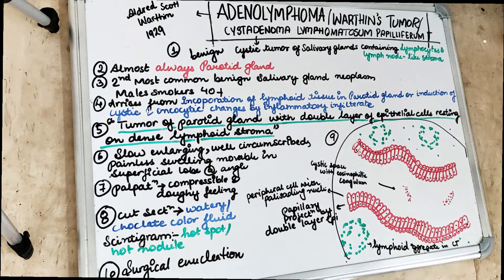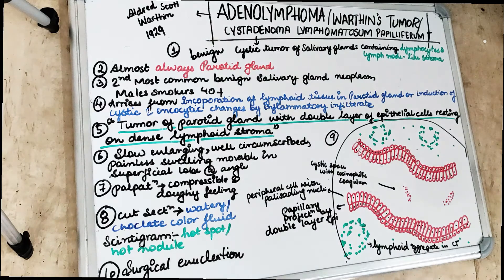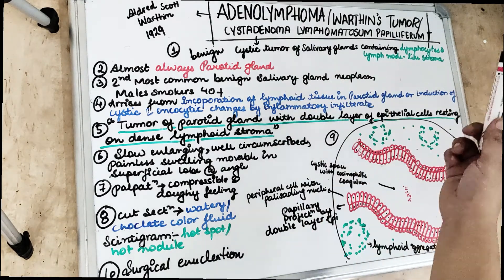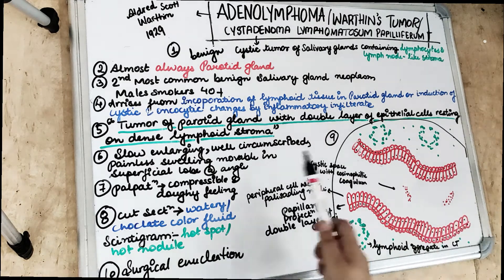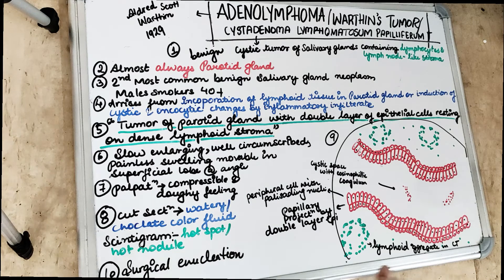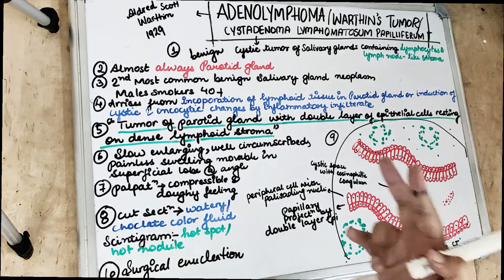The suffix '-oma' in the name tells us it is going to be a benign tumor. So adenolymphoma, or cystadenoma lymphomatosum papilliferum, is a benign cystic tumor of the salivary gland. Breaking down the name — 'lymphoma' indicates it contains lymphocytes, and it has a lymph node-like stroma in the connective tissue. So we will see lymphoid aggregates in the connective tissue in adenolymphoma. It is the second most common benign salivary gland neoplasm after pleomorphic adenoma.